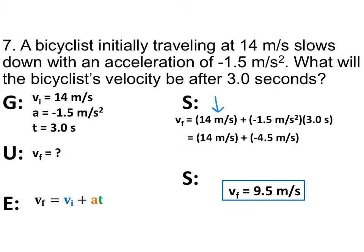Plug in what you know: vi is 14 meters per second, a is negative 1.5 meters per second squared, and t is 3.0 seconds. Multiplying a times t gives negative 4.5; adding that to 14 gives a final answer of 9.5 meters per second. Notice I'm not squaring this number because that squared is just in the units — it's not part of the equation. That's something I was seeing on several people's papers, so be really mindful of that.